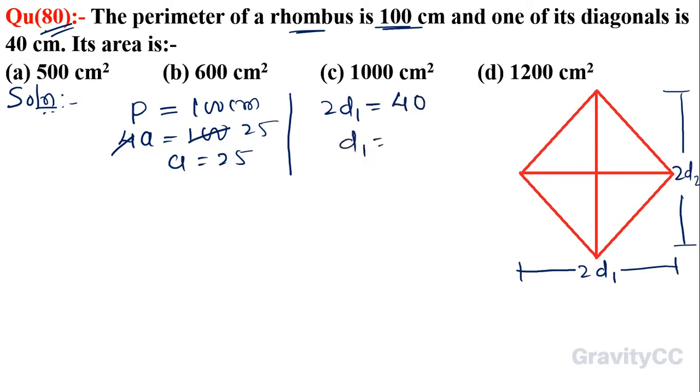So d1 equals 20 centimeters. This is d1, this is d2, and this is side a.